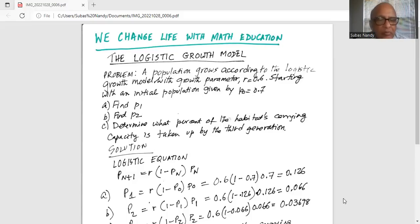So for p n plus 1, if we substitute n is equal to 0, then 0 plus 1 is 1. So p sub 1 is equal to r times 1 minus p0 multiplied by p0. Why? Because n is 0, that's how we are calculating p1 as a function of p0.